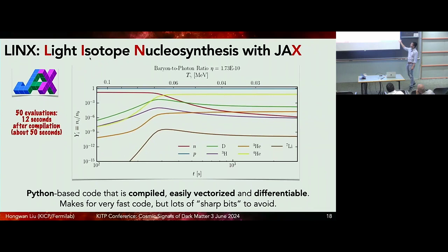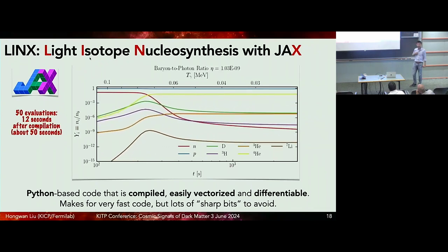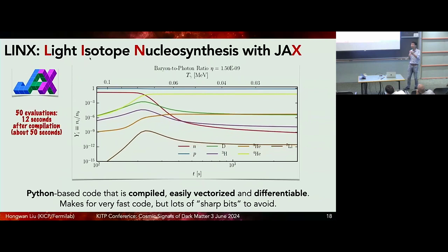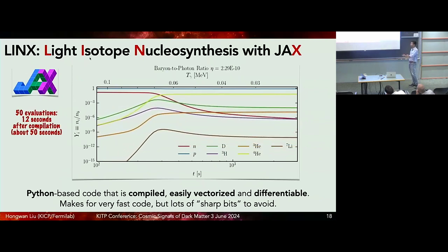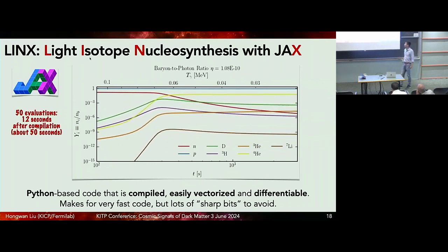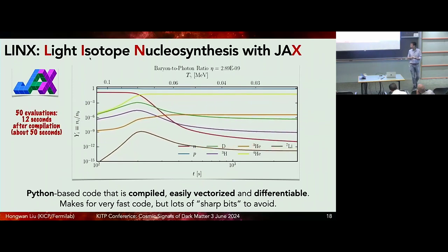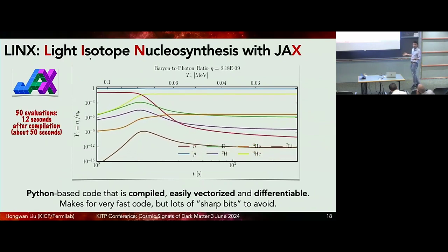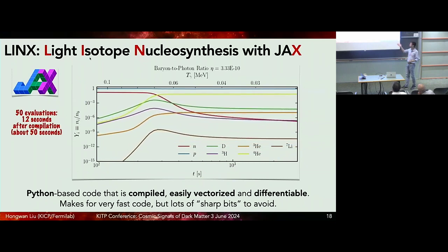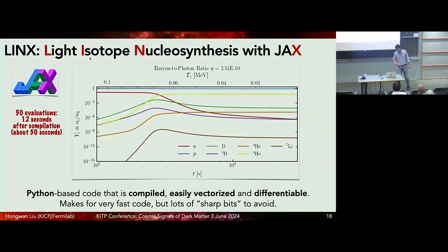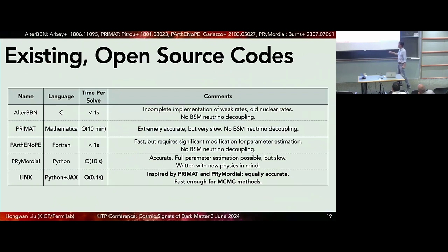Here I'm showing you 50 different evaluations of Big Bang nucleosynthesis as I alter the baryon to photon ratio, which is the same thing as altering the baryon abundance. You can see here there are 50 evaluations, I can do this in about 12 seconds after one initial round of compilation. It's actually much faster than the code takes to make this plot. Now we have a Python-based code that uses this thing called JAX, which allows you to compile code, run it many times very quickly. If you need to vectorize things, it's also very easy to vectorize based on the framework given to you in JAX. It's also differentiable, which I'll say one or two words about right at the end of the talk.